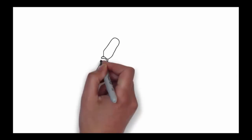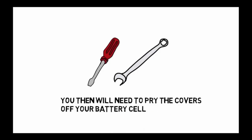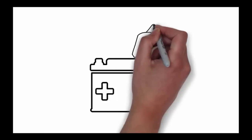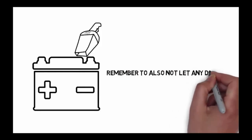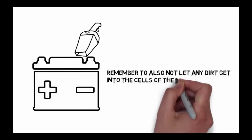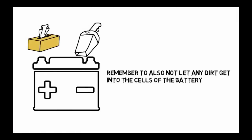Through the use of a screwdriver, you will then need to pry the covers off your battery cell. You can use a small vacuum to suck out any large specks of dirt. Remember to also not let any dirt get into the cells of the battery. Then wipe the area around the holes of your cells with a damp paper towel.